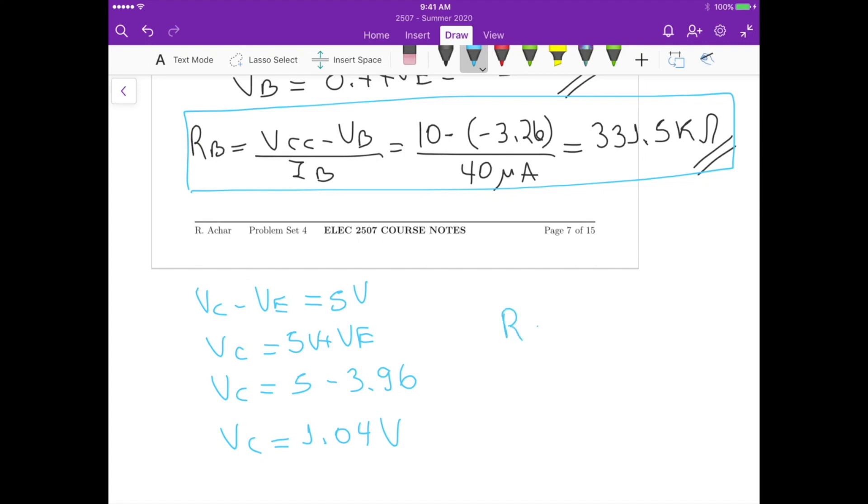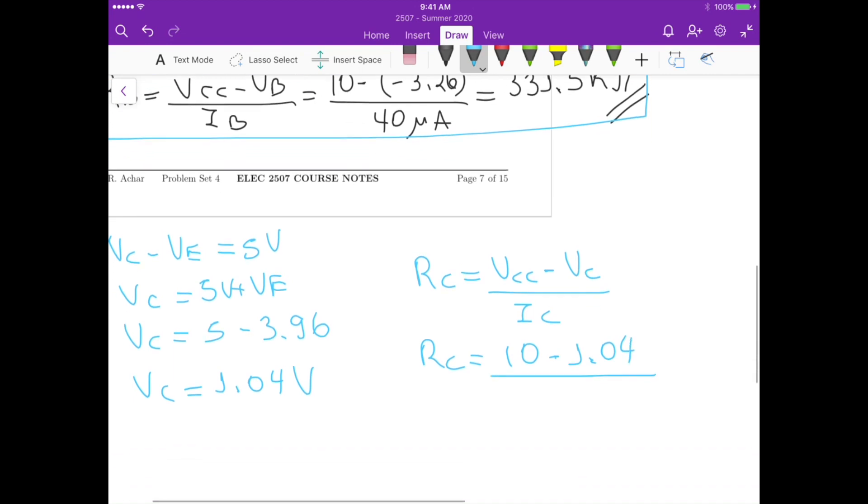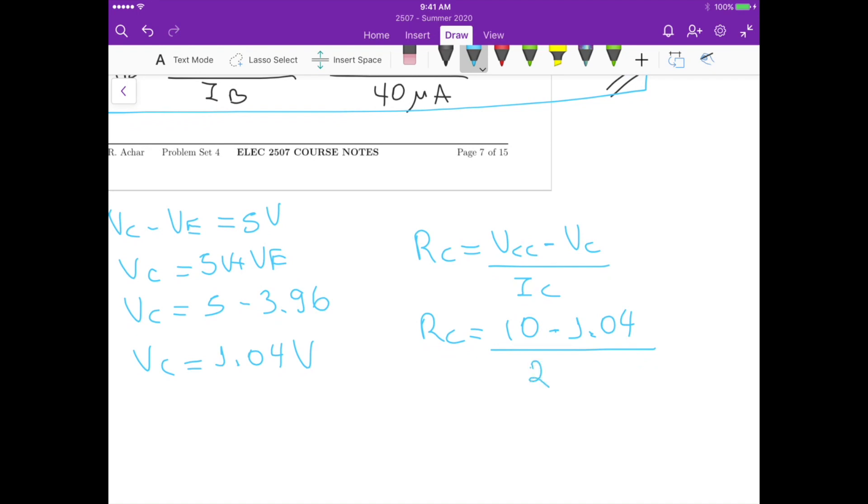Now we can calculate RC using the same approach as RB. That's going to be VCC minus VC divided by the collector current. That's RC, which is equals 10 minus 1.04 divided by IC, which is 2 milliampere. This gives us RC equals, so it's 10 minus 1.04 divided by 2 milliampere. That's 4.48 kilo-ohms. So that's it for this problem.